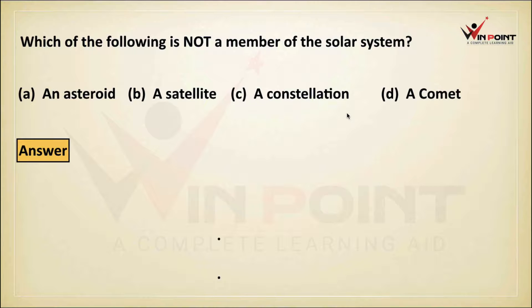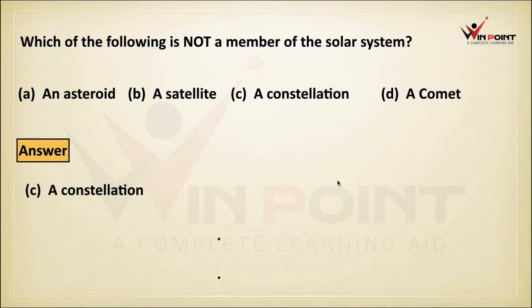Constellation means it's a group of stars. It is not a member of the solar system, because in the solar system there is only one star, and that is the sun.